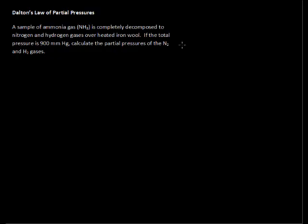In this video, I'll walk through an example of Dalton's law of partial pressures. A sample of ammonia gas, NH3, is completely decomposed to nitrogen and hydrogen gases over heated iron wool. If the total pressure is 900 millimeters mercury, calculate the partial pressures of the nitrogen and the hydrogen gases, N2 and H2.